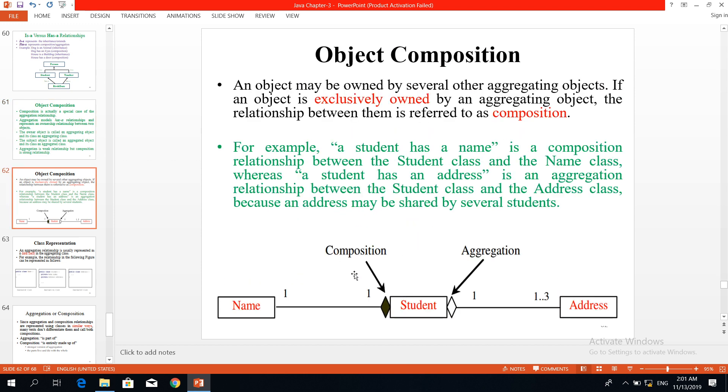The difference is: aggregation is represented with a diamond. Student has an address. Student has a name - this is composition. The difference between composition and aggregation - student has a name, this is composition. A student has an address - this is a relationship. The name is composition, but address is aggregation because the address can be shared by multiple students.